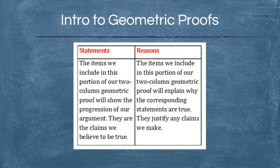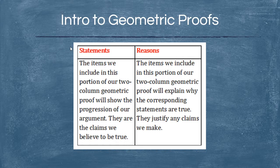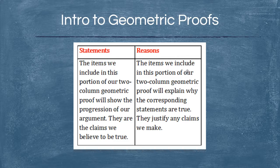Hey guys, this video is about geometric proofs. I'm going to start you off with a quick intro about how to set it up and refresh your memory for those of you who learned about algebraic proofs last year in algebra. This is the template we'll follow for all of our proofs: on the left side are statements and on the right side are reasons. Statements are items we include to show the progression of our argument — basically claims. On the right side, reasons are theorems or justifications that explain why our statements are true.